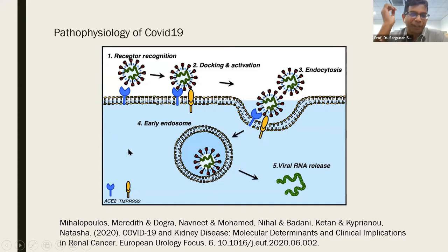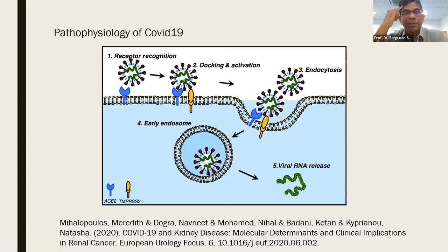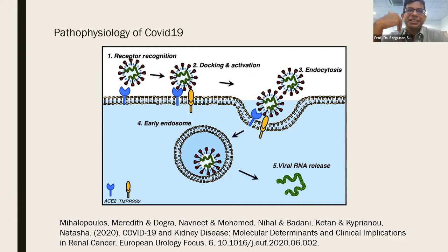The angiotensin-converting enzyme 2 protein — ACE2 — is one of those important enzymes involved in the renin-angiotensin-aldosterone mechanism that helps regulate blood pressure. If there is very little blood going into the kidneys, there is a drop in blood volume and blood pressure. The juxtaglomerular apparatus secretes renin, which from the liver changes angiotensin to angiotensin 1 and 2. What happens is you have your angiotensin-converting enzyme, which turns out to be a membrane protein.